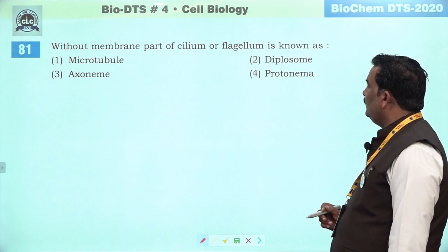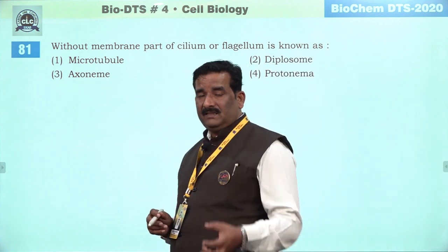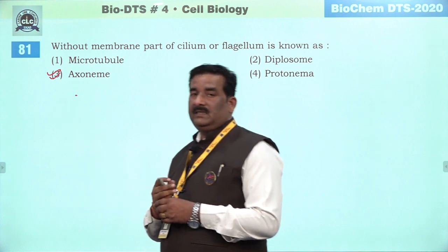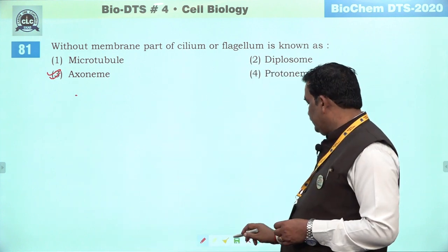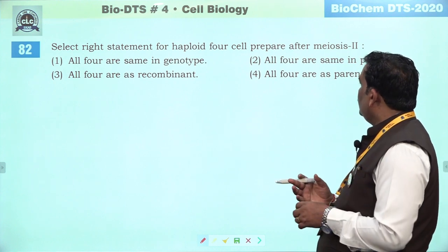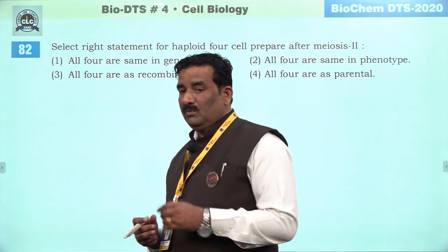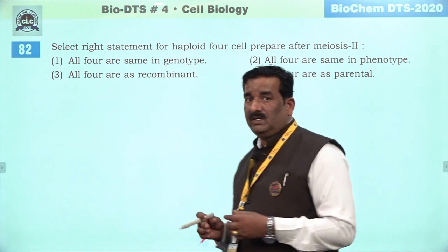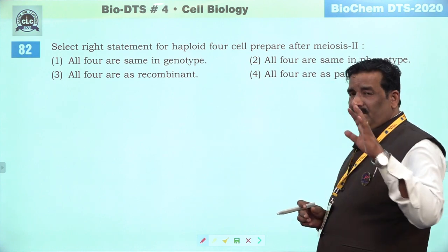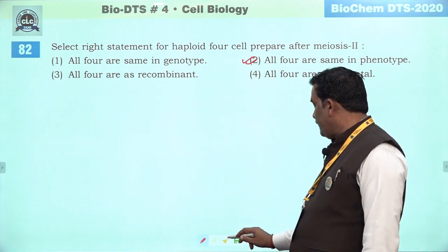Next question: without membrane part of the cilia and flagella is known as axoneme. Yeh NCRT mein describe hai. Achha question hai — NEET par abhi koi question nahi puchha hai aur yeh unique achha question bana hua hai — may be possible ki yeh aane waale exam mein mile. Next question: select right statement for the haploid cell prepared after meiosis second. Jo cell gamete bante hain woh kabhi bhi genetically same nahi hote — genetically variability show karte hain. Even do jo bante hain woh kahin na kahin recombinant and two parental combination ko show karte hain. Second humare liye better option hai.